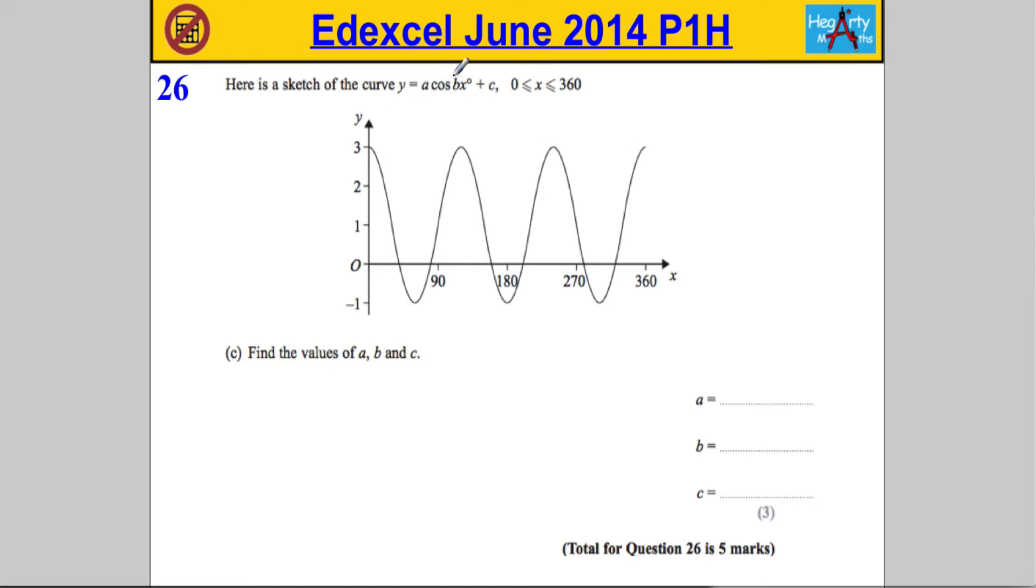We need to know the impact from looking at the graph—what they've done to the original function. So let's consider the original function y equals cos x and I'm going to put that on this diagram here. Now y equals cos x starts to repeat at 360.